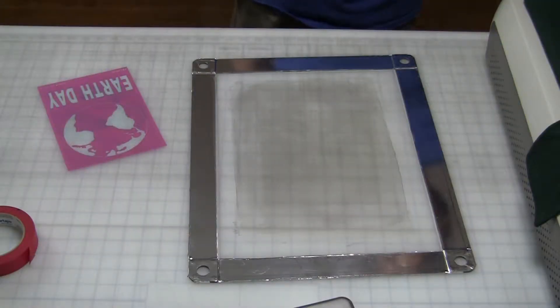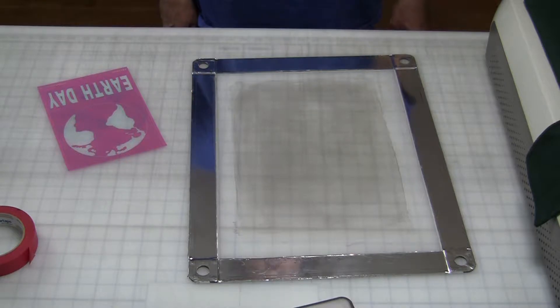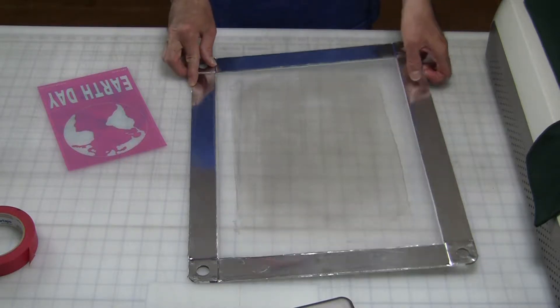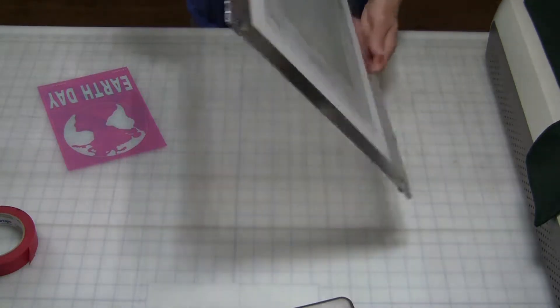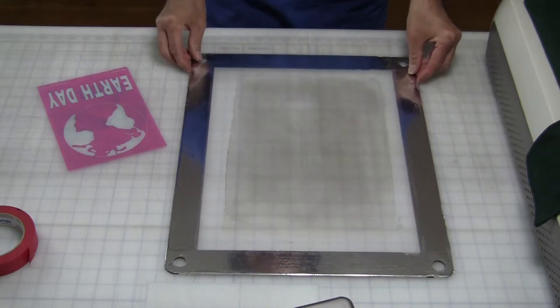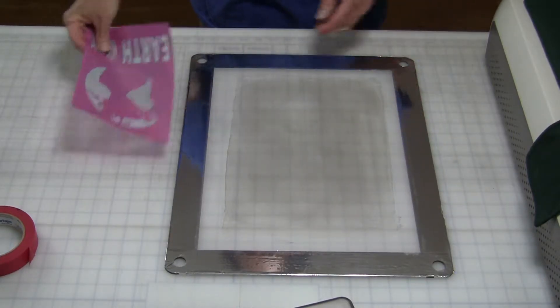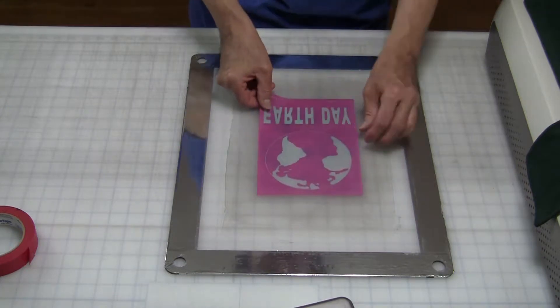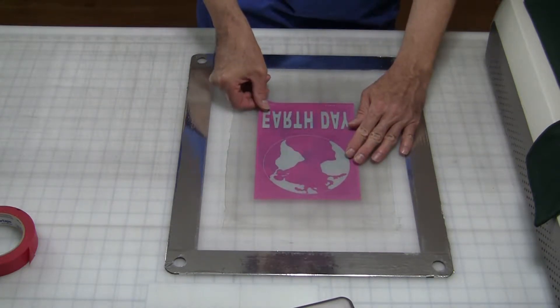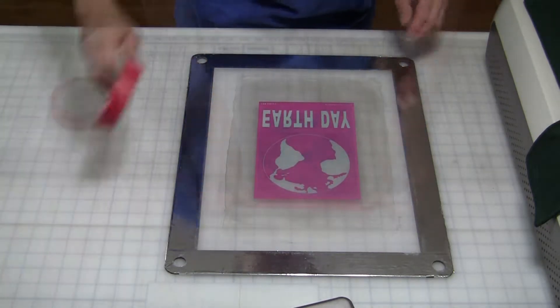Find an old UDO screen frame and wash off any remaining emulsion. Now tape a StencilPro stencil to the underside of the UDO screen, face down. I'm using our Earth Day stencil for this demo.